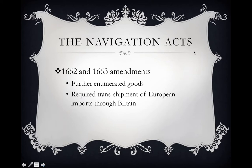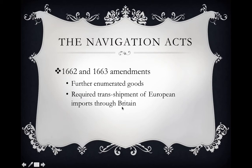The Navigation Acts had a number of Acts and amendments added over time. Initially, the Acts didn't require transshipment of all goods — you could ship goods from the colonies straight to the Netherlands. But the British tightened up the Navigation Acts to improve the flow of trade through Great Britain, requiring that all goods had to be transshipped — shipped to Great Britain and then to their final port of destination.